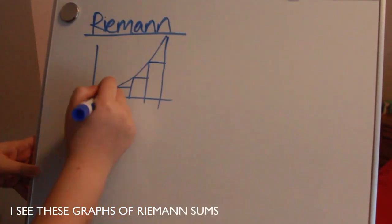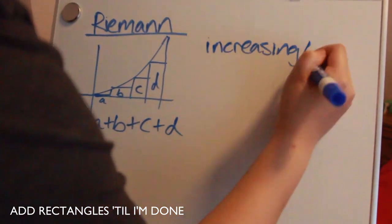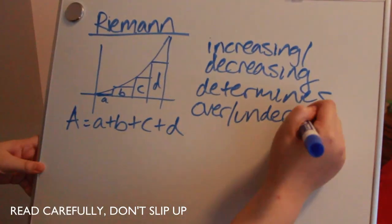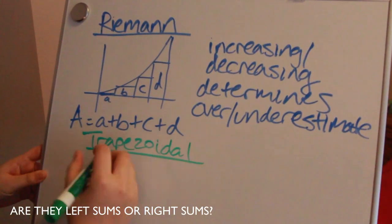I see these graphs of Riemann sums, add rectangles till I'm done. Read carefully, don't slip up. Are they left sums or right sums?